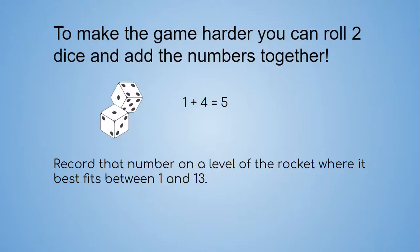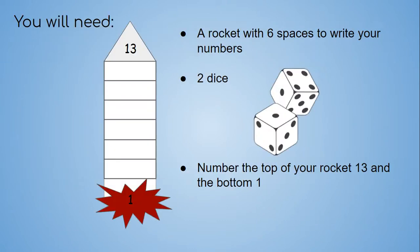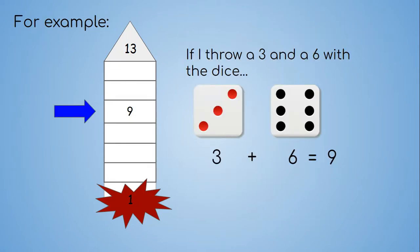we can roll 2 dice together and add the numbers. You'd record that number on a level of the rocket where it best fits between 1 and 13. So you'll need your rocket with a few extra spaces. I've got 6 spaces on my rocket and 2 dice. Remember to put number 1 at the bottom and we'll put number 13 at the top, because our dice will only let us record numbers between 2 and 12. When we throw our dice, if we throw a 3 and a 6, we can add them together and that would equal 9. Can you see where Mrs Crans put 9 on her rocket? This is another way you can play the game.